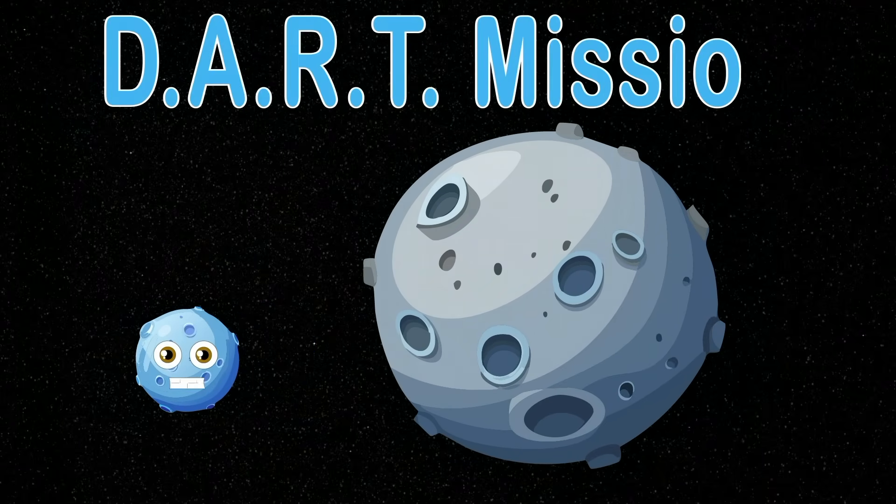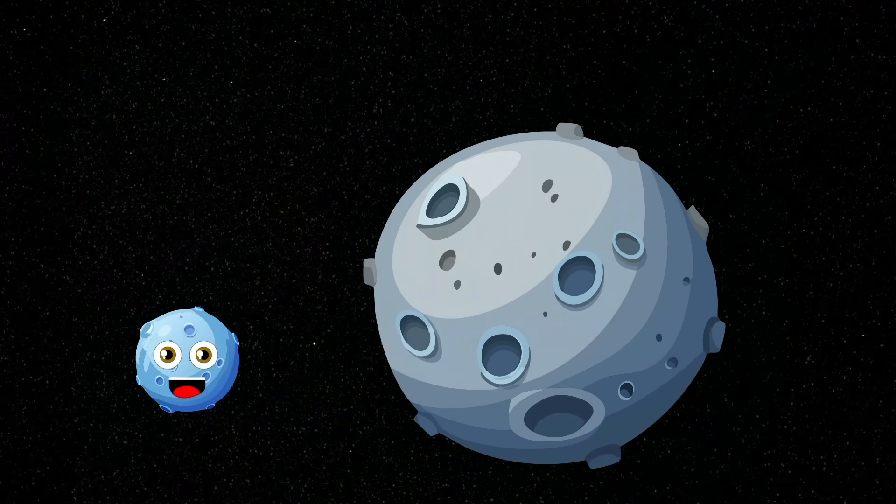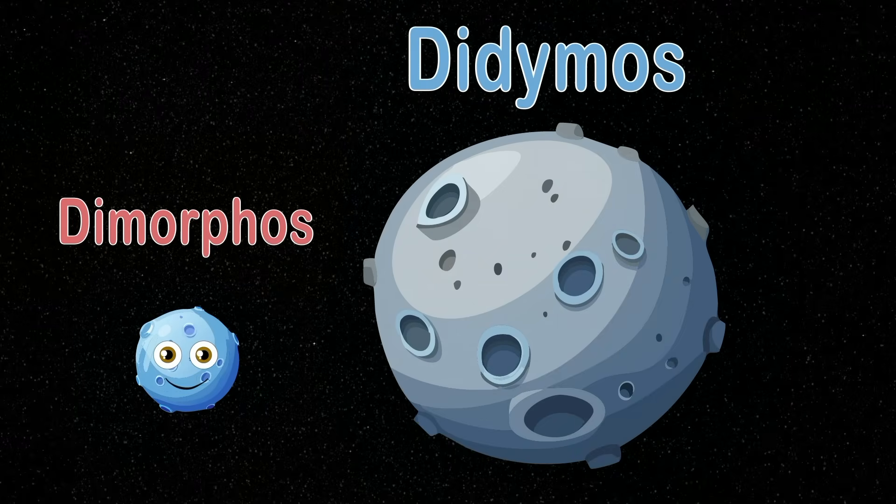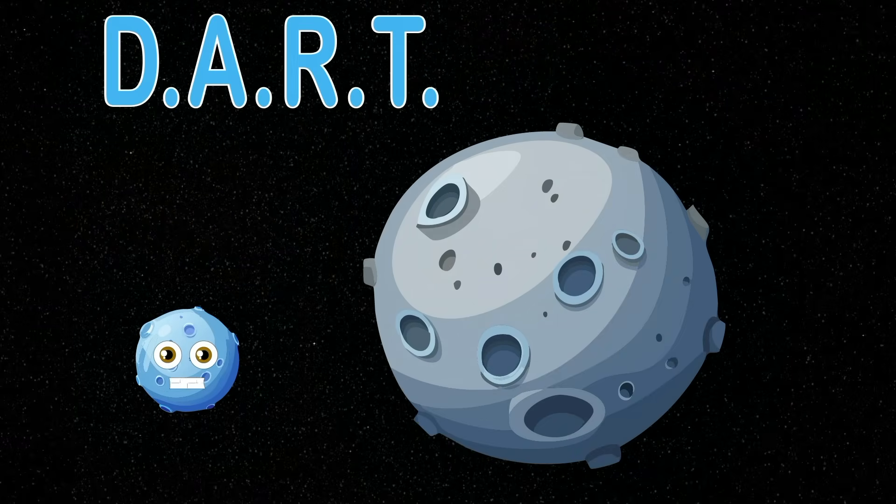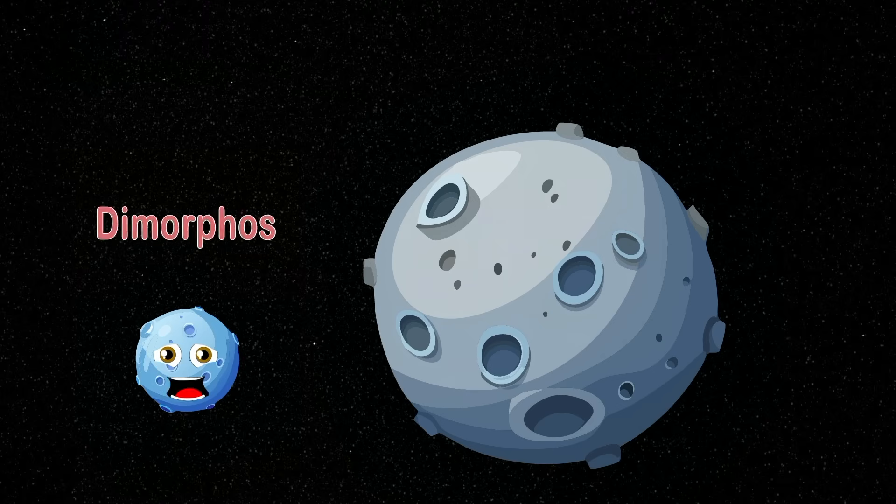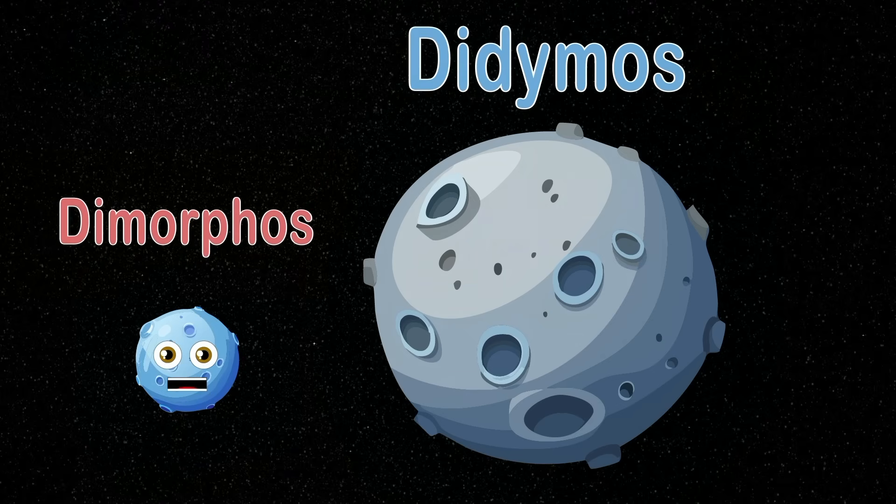What is the DART mission and how did it go? My name is Dimorphos, I orbit Didymos. What is the DART mission and how did it go? My name is Dimorphos, I orbit Didymos.